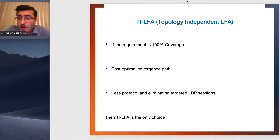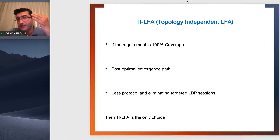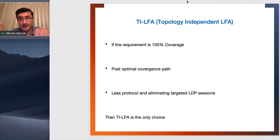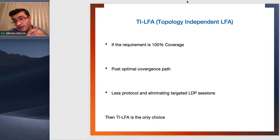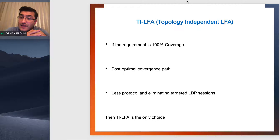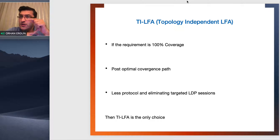Let me explain post-optimal convergence path. We have three paths — let's say primary is the top one. The data plane FRR might say use the middle path, and the control plane might say use the bottom path. If the primary fails, FRR immediately kicks in. If later the control plane says don't use that FRR path, use the third one, then FRR is not giving us a post-optimal path after convergence.